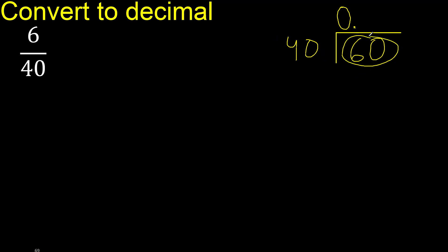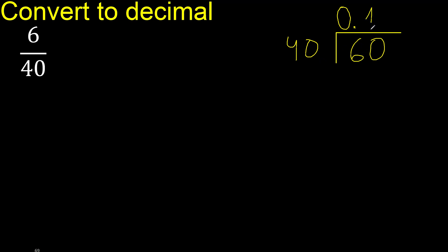Therefore, with 60: 40 multiplied by which number is nearest to 60 but not greater? 40 multiplied by 2 is 80 — excessive. 40 multiplied by 1 is 40. Subtract: 20. There is no number that goes down, therefore complete — always complete with 0.